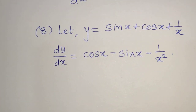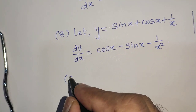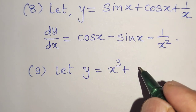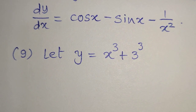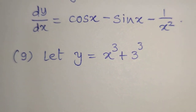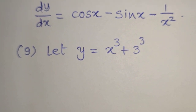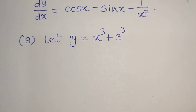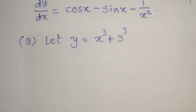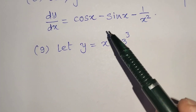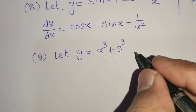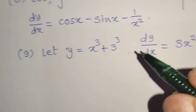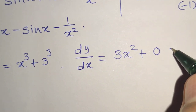The ninth example: let y equal x cubed plus 3 cubed. Note that 3 cubed is just a number — 3 times 3 is 9, times 3 is 27 — so it is a constant. The derivative of a constant is 0. Therefore dy by dx equals the derivative of x cubed, which is 3x squared, plus 0. The final answer is just 3x squared.